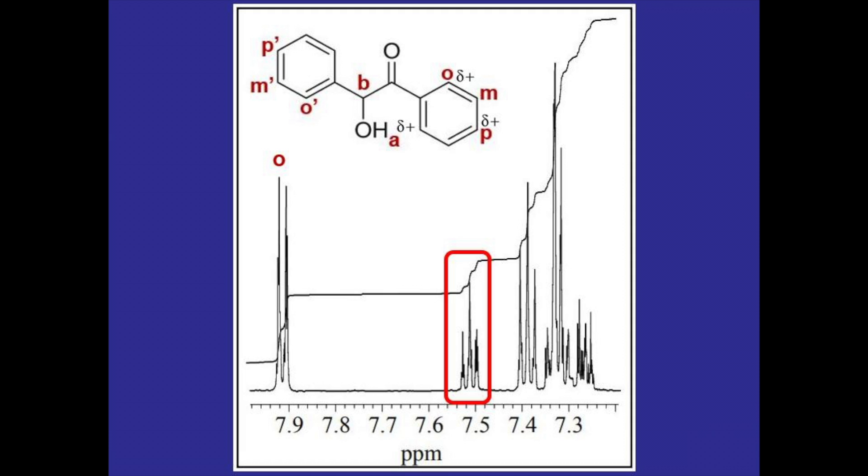Now from here we could probably pretty easily move on to the next peak and analyze that one. It's a clear triplet with an integration that looks to be about half the size of the integration for hydrogen O so it would be an integration of one.